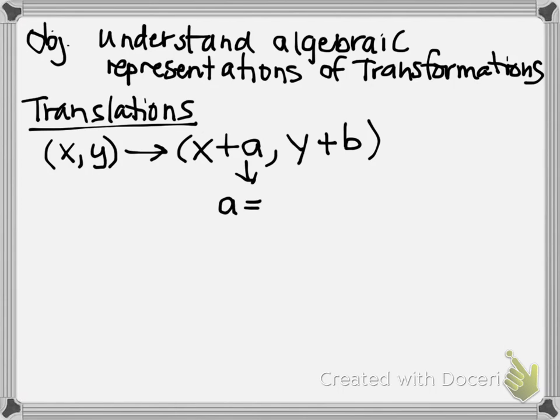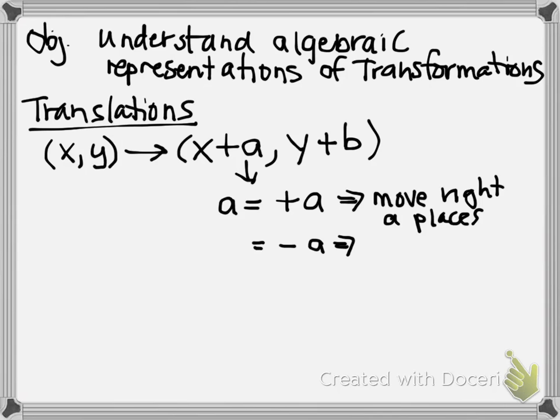So let's kind of break down what could happen. A could be a positive a if the directions tell you to move where? Right. Right. So this would give you move right a places. But if we get a negative a, what is that going to tell you to do? It's going to tell you to move the other direction. Move left a places. Now, with some translations, that's all it was. It was just moving right or left. That's all they wanted you to do.